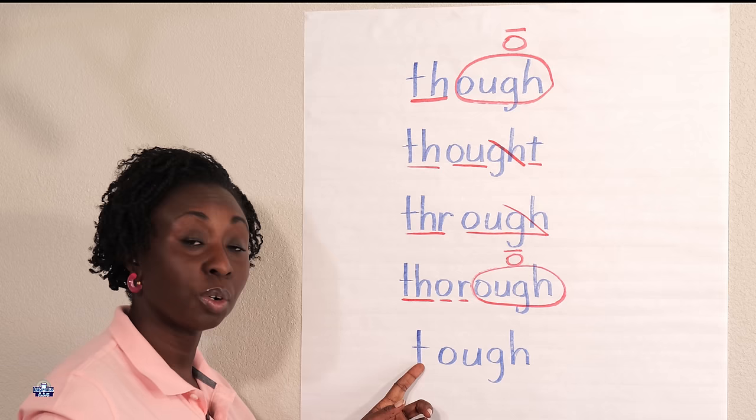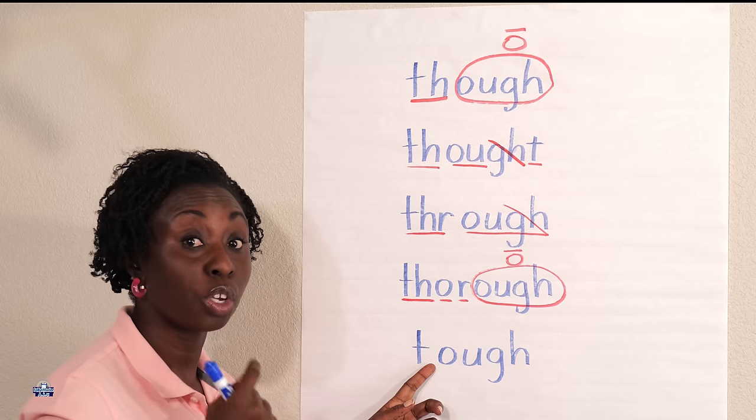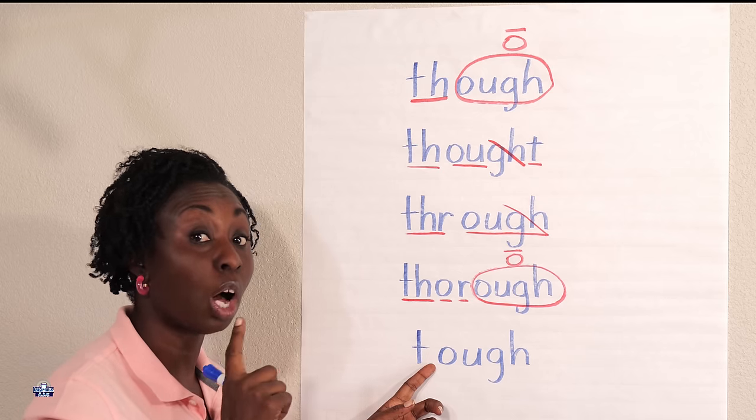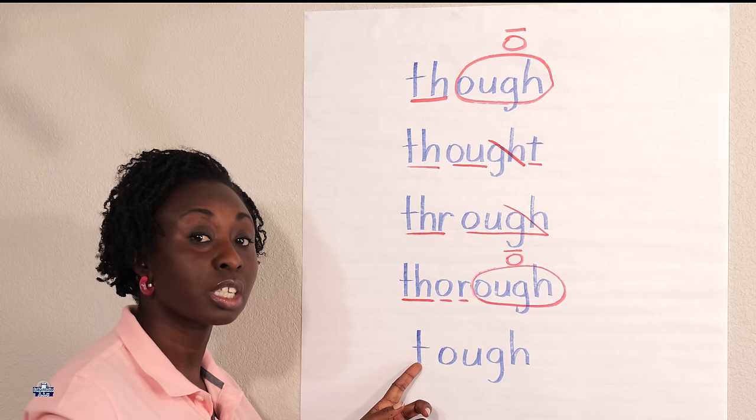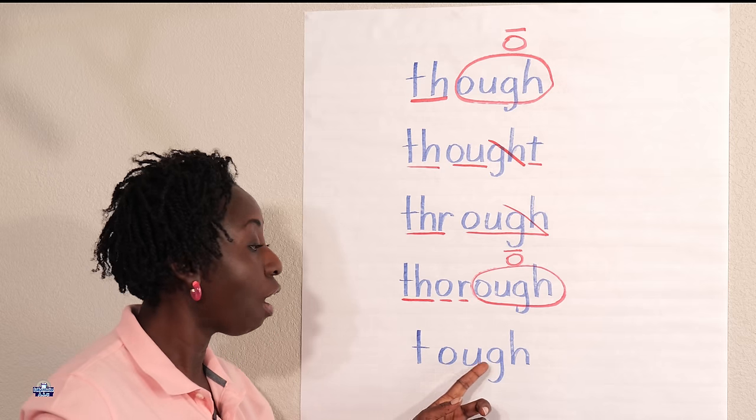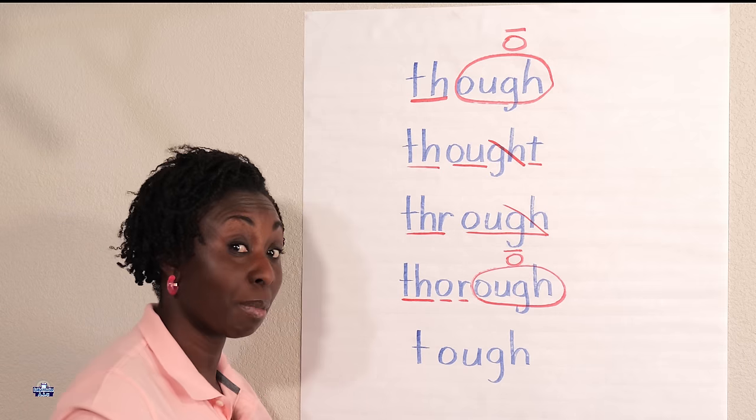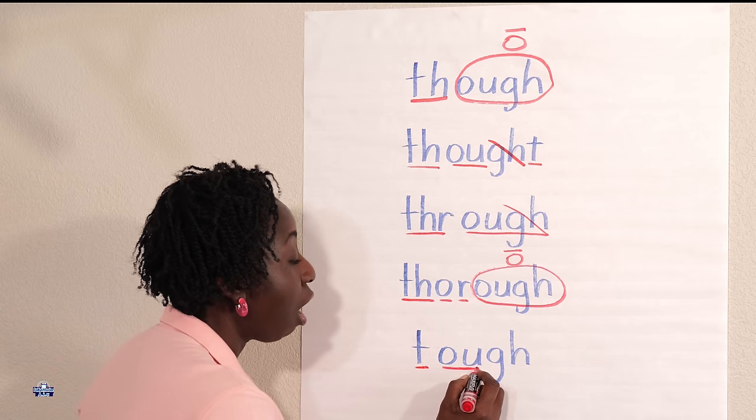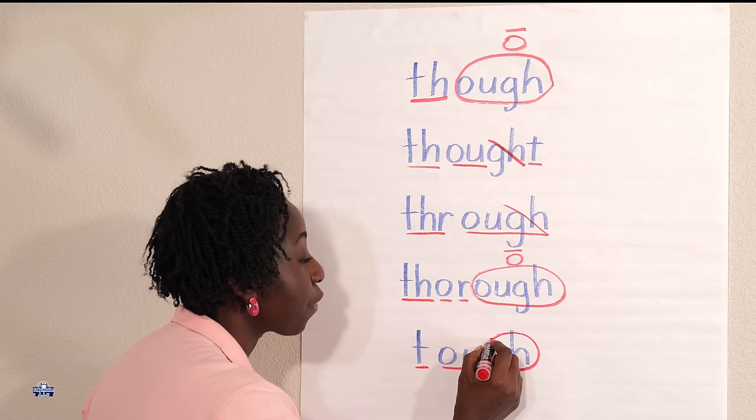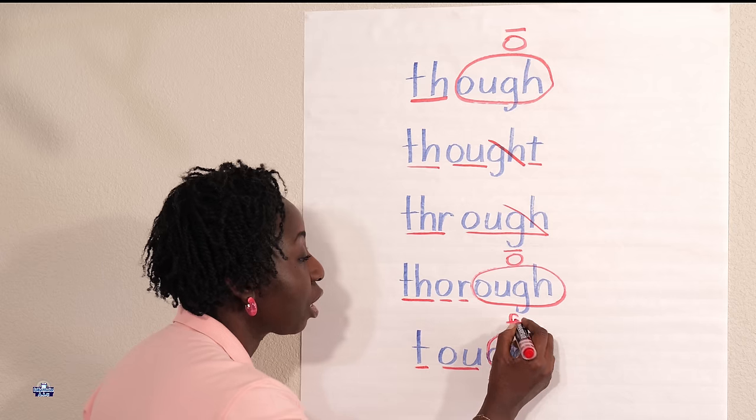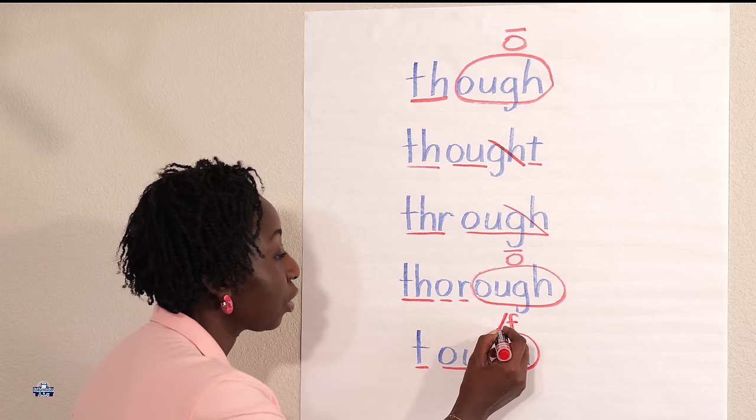So now we don't have any TH, so the tongue will not go out. It's just T, O, three sounds. So let's mark it, T-O, this is the F sound, the F sound here.